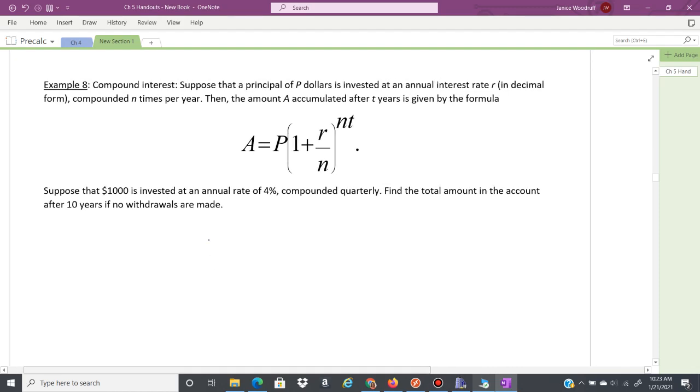So here's our formula. You're going to have the amount in the account equals the principal, and this is going to be times one plus r, that's the interest rate as a decimal, over n, so how many times it's compounding, and then that's raised to the n again, how many times it's compounded, and then t is the time in years.